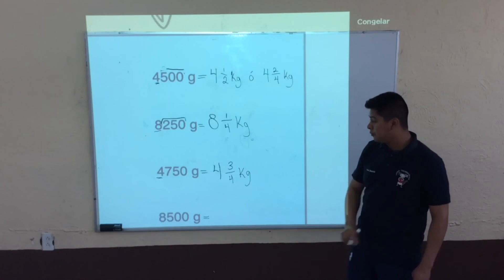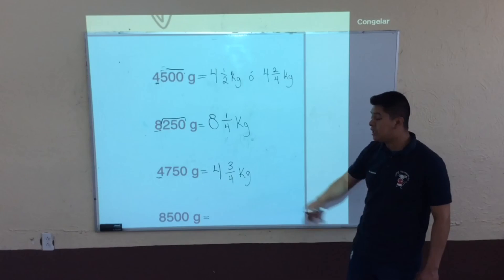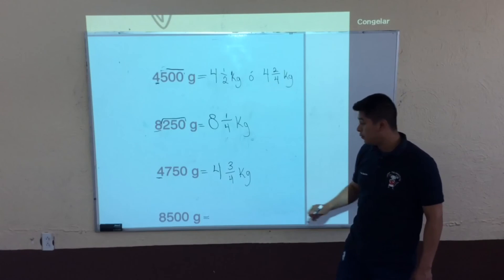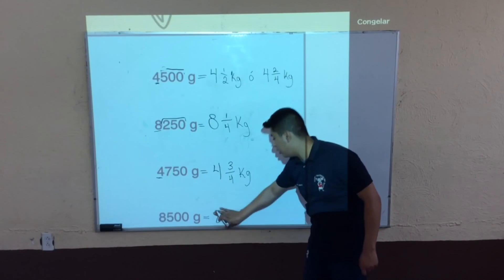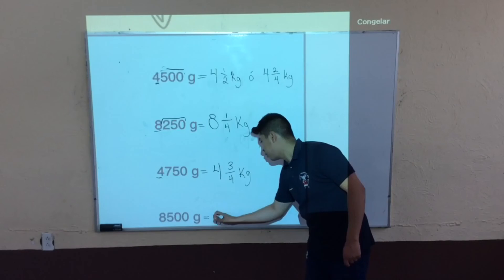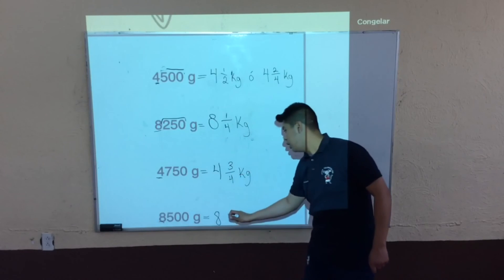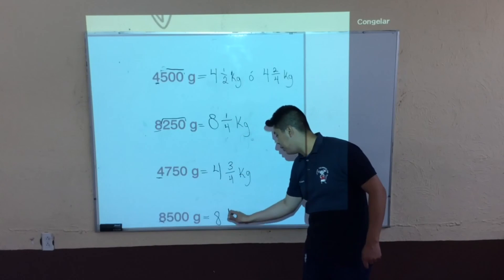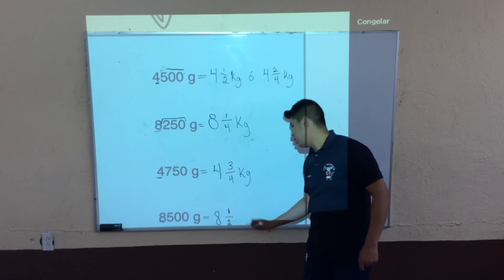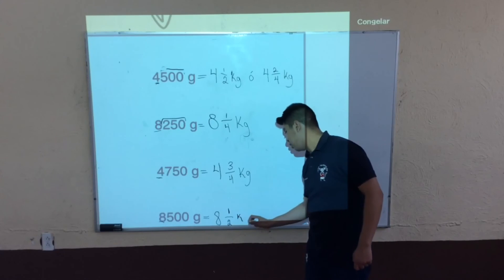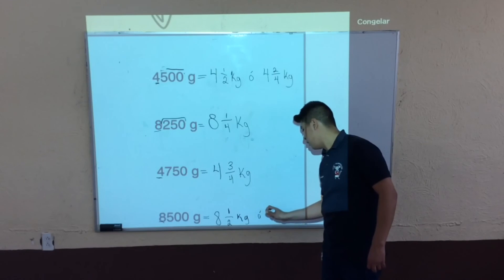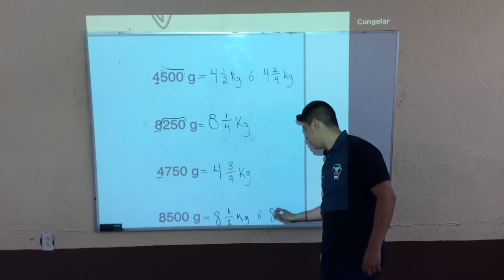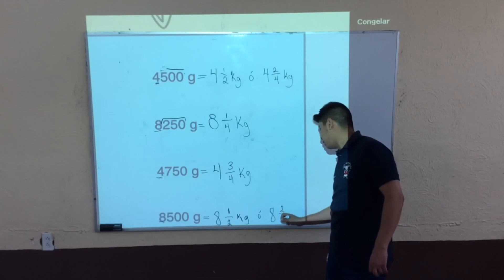Y por último, 8500. Pasamos el 8 porque tenemos 1000. ¿Cuánto sería? La mitad. 8 enteros con un medio de kilogramos, o 8 con dos cuartos de kilogramos.